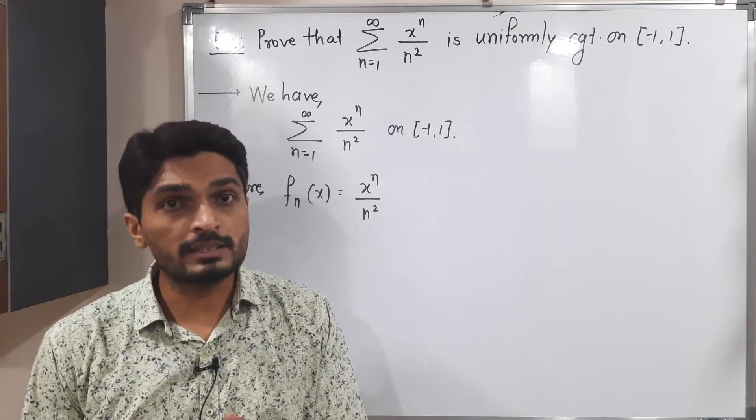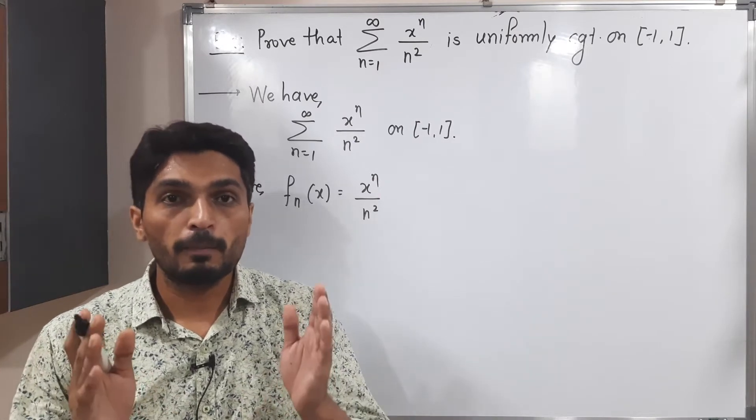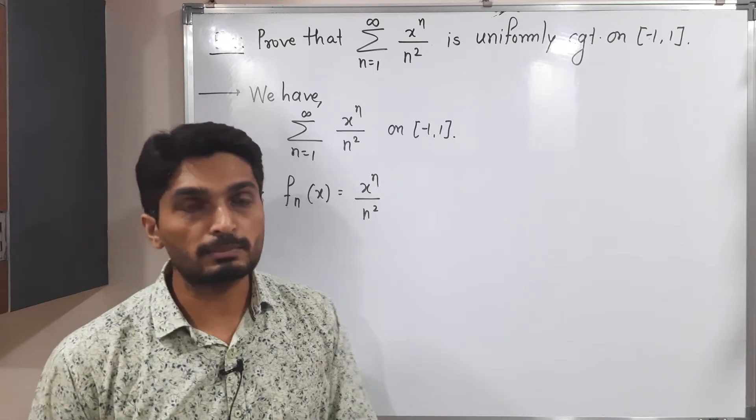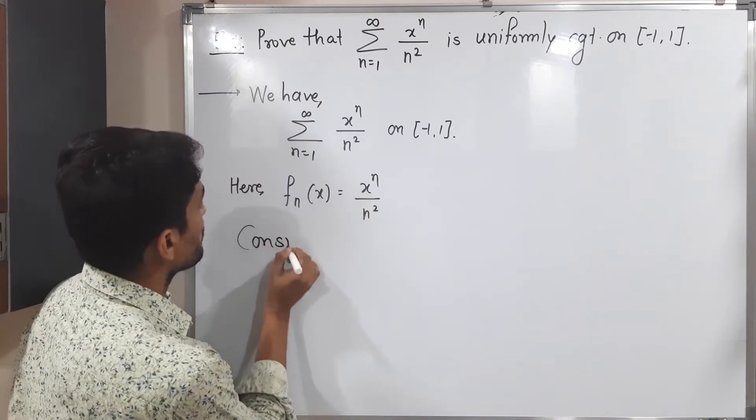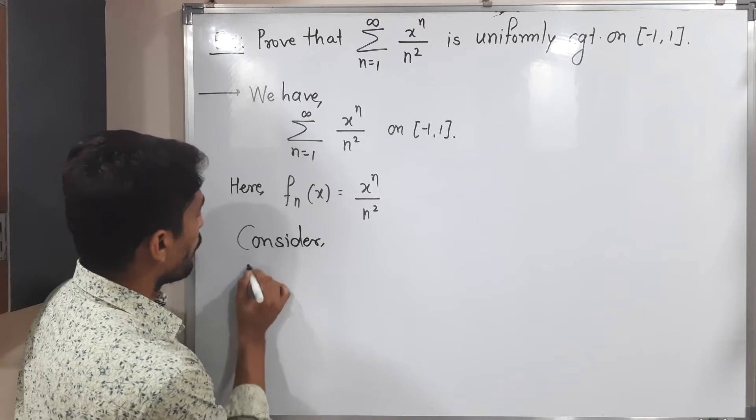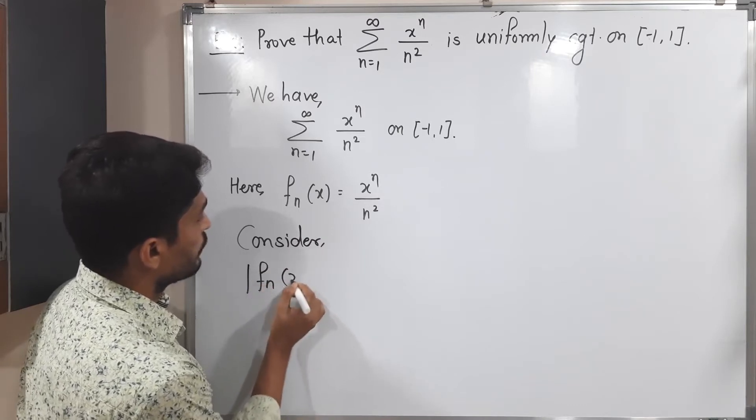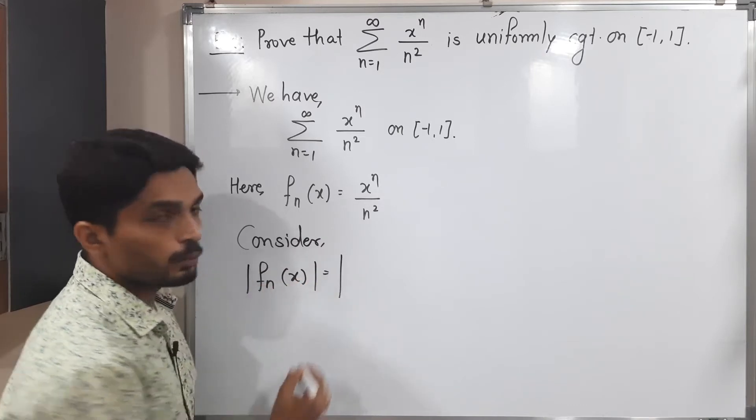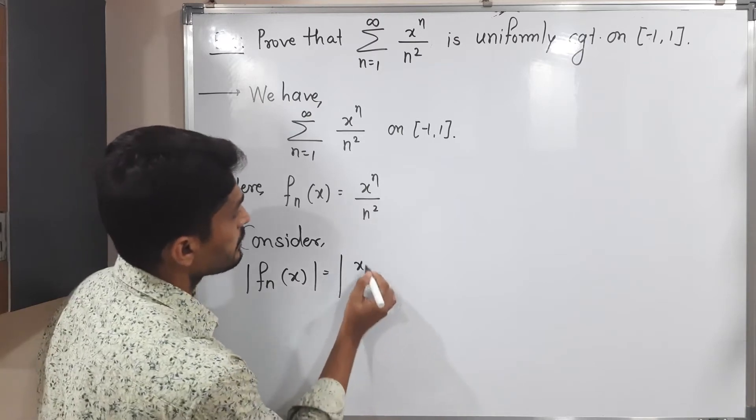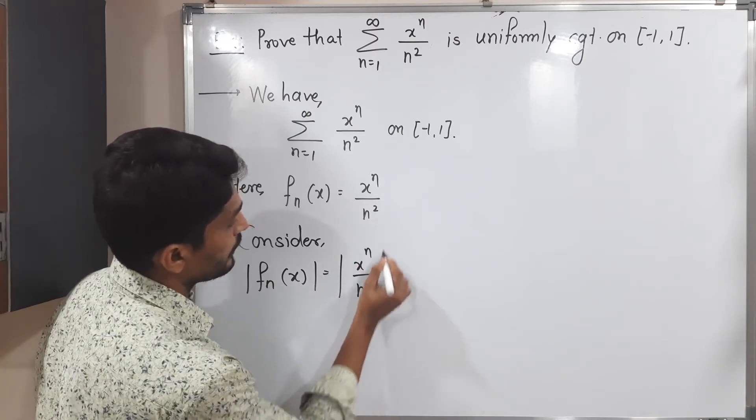In Weierstrass M-test, we find the value of mod fn of x. Let us do the same thing here. Consider mod fn of x, which is equal to mod of fn of x here, x raised to n upon n square.